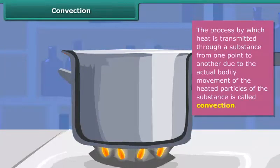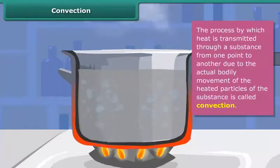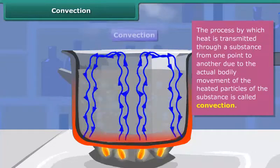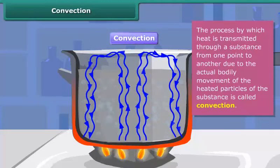The process by which heat is transmitted through a substance from one point to another due to the actual bodily movement of the heated particles of the substance is called convection. Convection of heat takes place in fluids, that is, liquids and gases, and involves the movement of matter from hot regions to cooler regions.